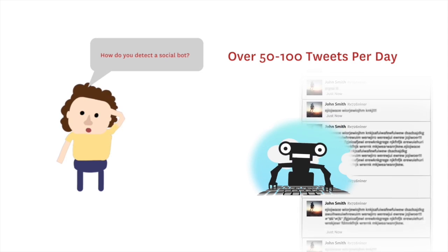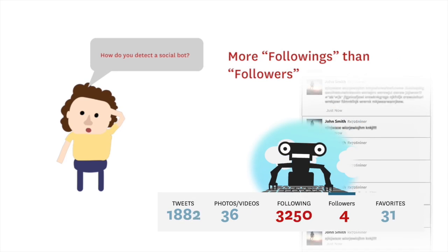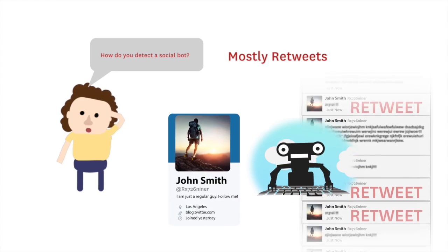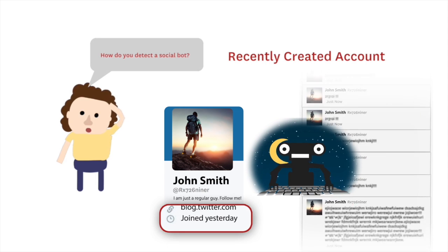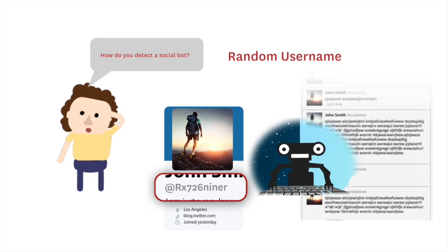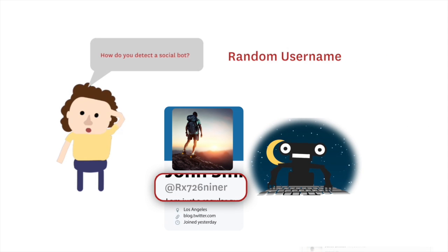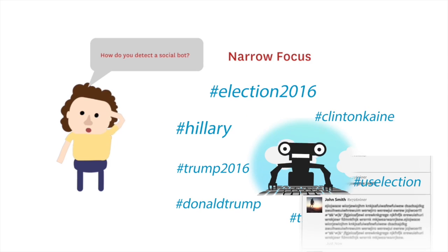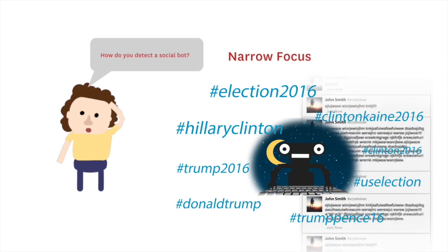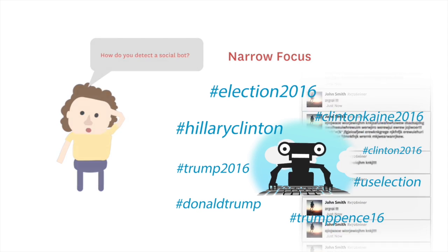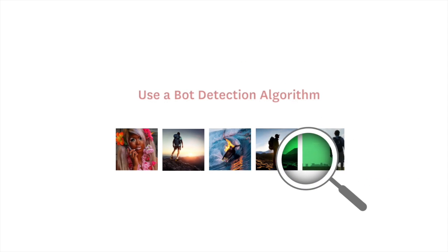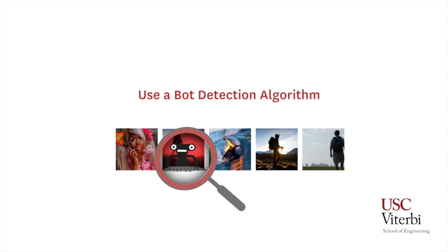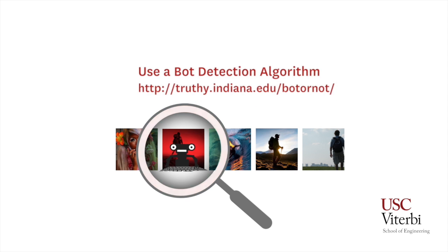Other red flags include having disproportionately more followings than followers, having mostly retweets and very few original posts, having a very recent account creation date, having a random-looking Twitter username often with plenty of digits or a series of random words, and focusing on only one topic of discussion — for example, politics and nothing else. And if you're still not sure, get some help from Professor Ferrara's bot detection algorithm at truthy.indiana.edu/botornot.